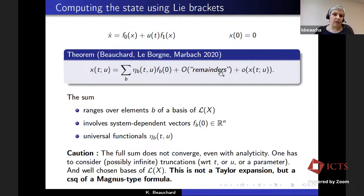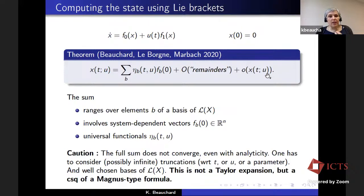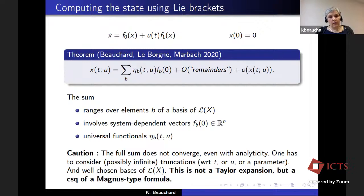There are remainders that you will have to deal with — a small O of X. We need to deal with remainders because the complete sum in general does not converge even with analytic vector fields. So we have to consider truncations of these terms, and the only known bases of L of X are called Hall bases. For these Hall bases, we prove that the sums that appear in our formula always converge.